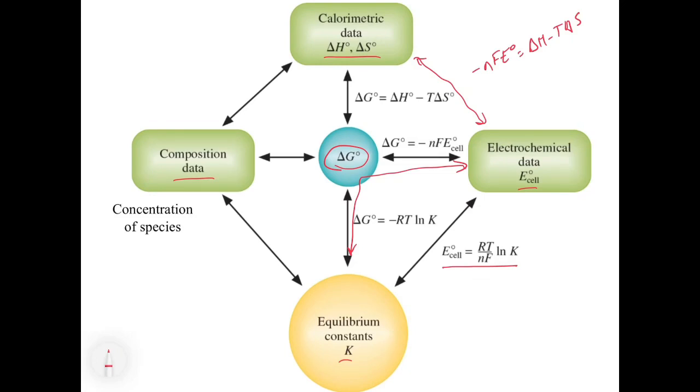Now, one thing I want to point out is when it comes to composition data, what this is, is think of this as K is equal to the concentration of the products over the reactants, right? So that's what this means, meaning we can get the value of K. And then if we know the concentration of one of the species, we can then use K to calculate the rest. We can create our ice table and come up with everything else. So that's what they're getting at with composition data.